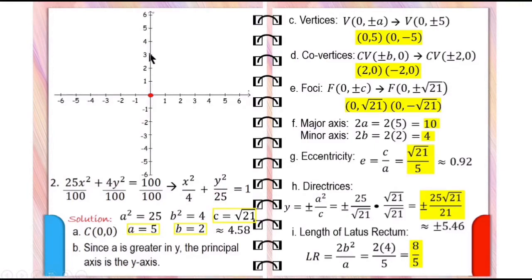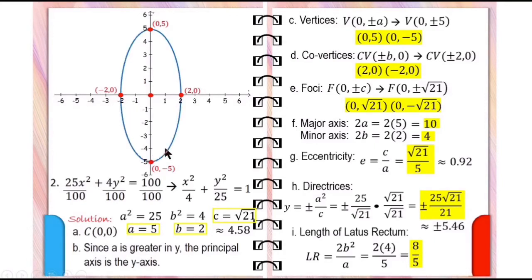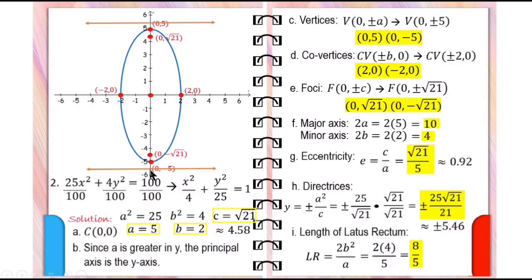We can now sketch the graph of this equation with center at the origin. Vertices (0, 5) and (0, -5), with co-vertices (2, 0) and (-2, 0). Connect the points and we now have the graph of an ellipse. The foci — (0, √21) is located here, while (0, -√21) is located here. The directrices are approximately y = ±5.46. The length of each latus rectum is 8/5 or 1.6. This is the graph of x squared over 4 plus y squared over 25 equals 1.